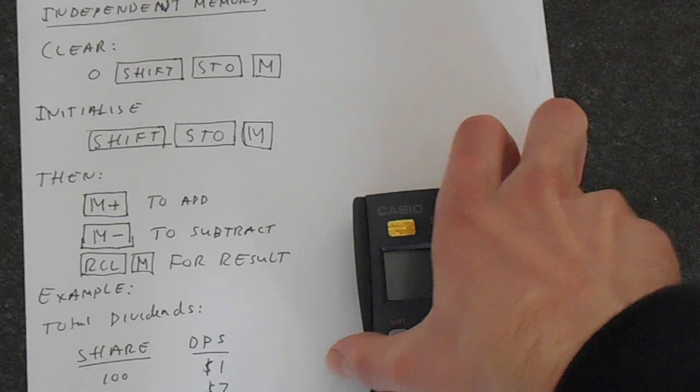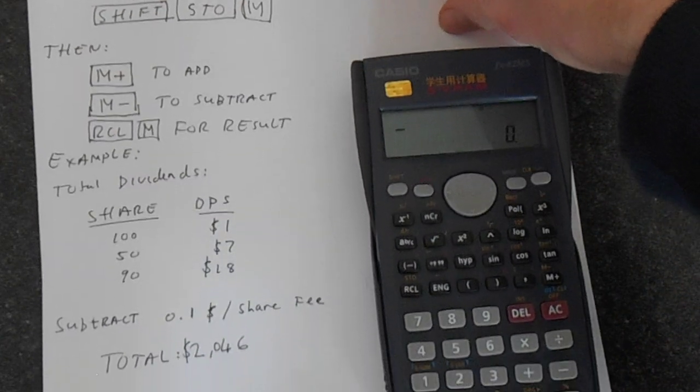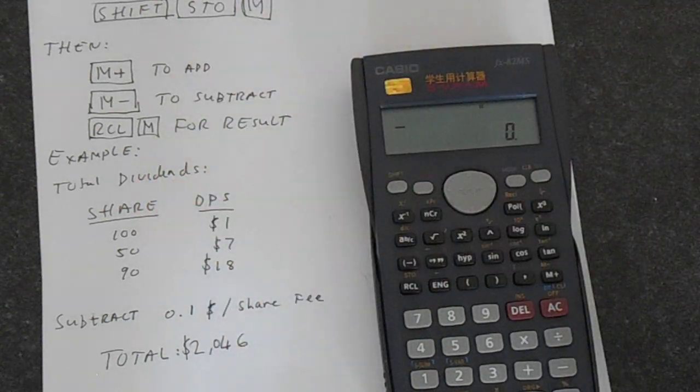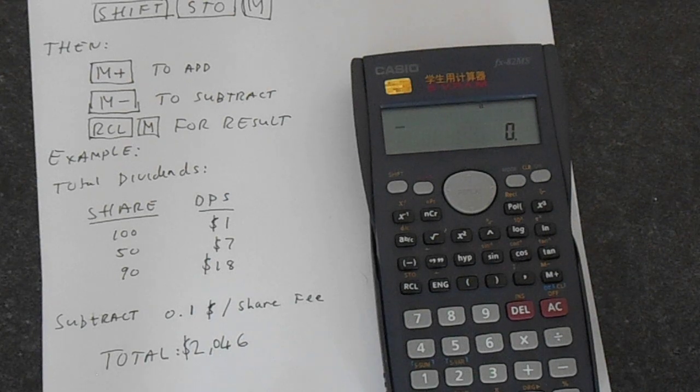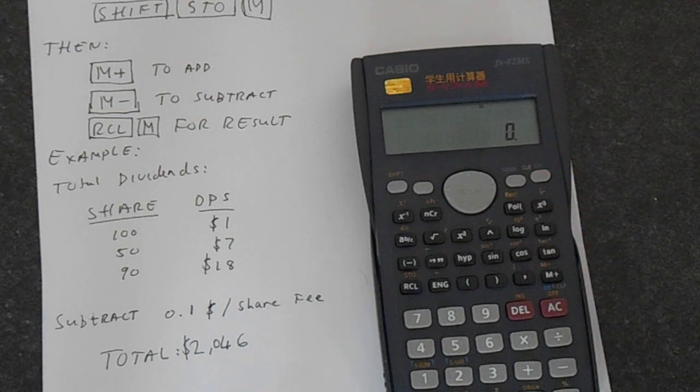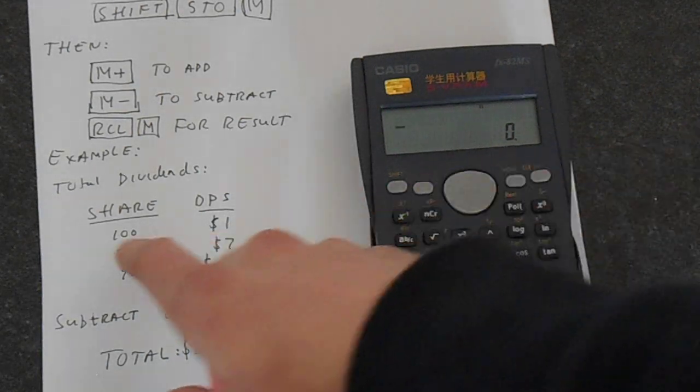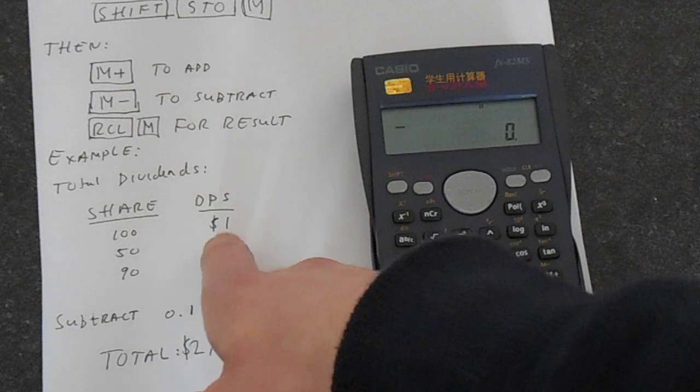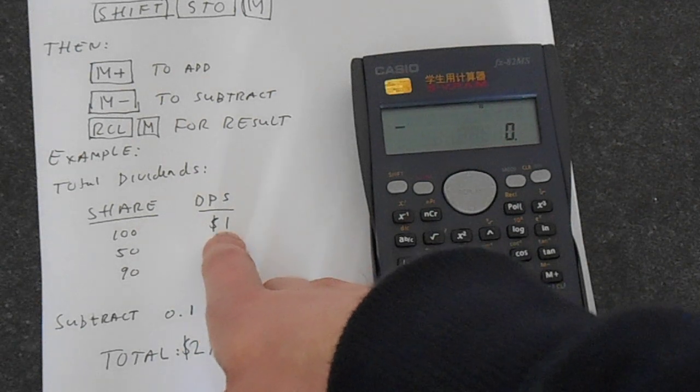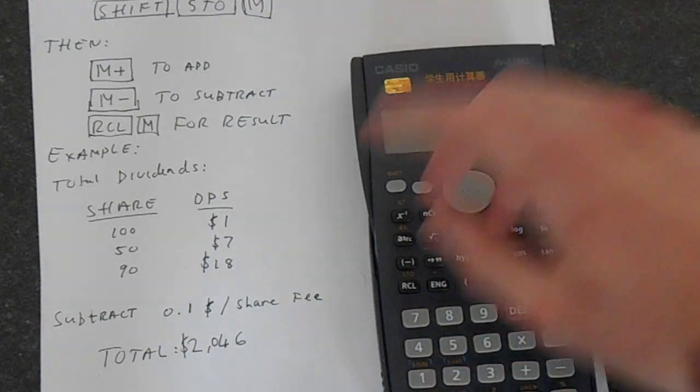This example is promised. I'll make this somewhat simpler to understand. We've got a load of dividend payments, and we're wanting to total these dividend payments, and then subtract off some expense. These numbers are completely arbitrary. It just said there's 0.1 dollars per share fee, maybe a custody fee, whatever. I've got this number of shares, and each share pays this dividend per share. Here's how we do it.